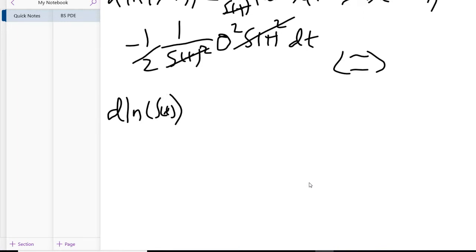This is all equivalent to saying, cleaning all this up and simplifying, that d(ln(S_t)) is equal to (r - (1/2)σ²)dt + σdW_Q. Obviously our goal here is not to have differentials and not to have ln.